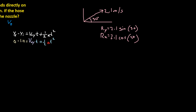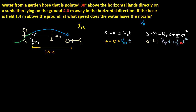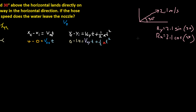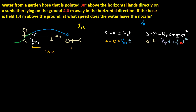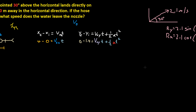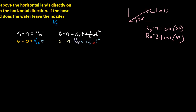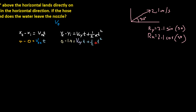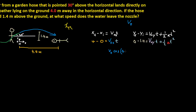If we apply this logic here, 2.1 meters per second would be like V0, and we have the degrees. So we can see that V0x equals V0 cosine of 30, and that gives us 4 equals V0 cosine 30 times T.